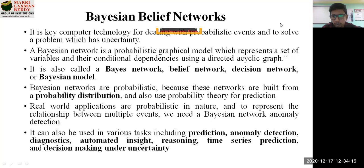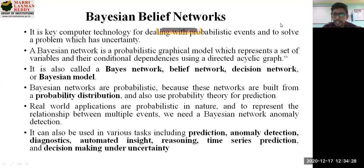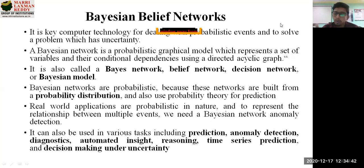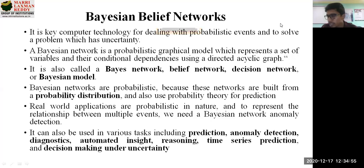A Bayesian network is a probabilistic graphical model which represents a set of variables and their conditional dependencies using a directed acyclic graph. Cyclic means it forms a cycle; acyclic means it does not lead to a cycle at the end of a given network. It has proper directions in the network — that's why it's called a directed acyclic graph, also abbreviated as DAG.